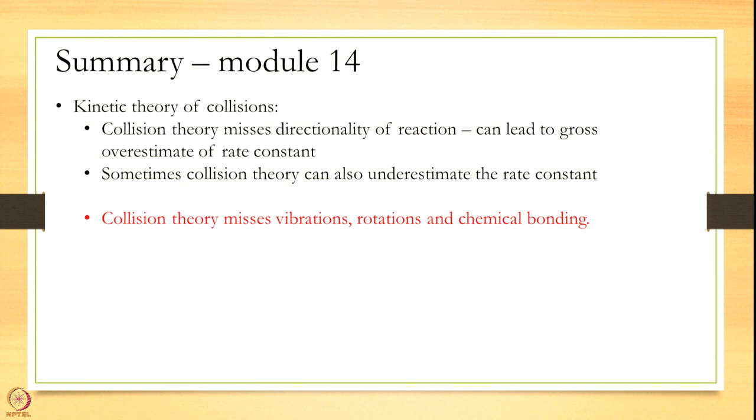With this we end our chapter on collision theory. From next time on we will start building towards transition state theory. For collision theory, there are a few things you should keep in mind in terms of when is it valid and when is it not. What we have approximated is that these are perfectly hard spheres moving at constant speed. There is no potential in between these molecules, no sense of bonding in between these molecules. It is a crude approximation, but nonetheless it is a first theory that gives a rate constant from an atomistic picture.